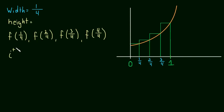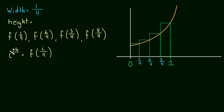So here, if we want the ith height — the height of any rectangle — what's our formula going to be? If I give you i as two, the second rectangle, you need a formula that gives you f of two-fourths. It's just going to be f of i over four. When i is one, you get one over four; when i is two, you get two over four. You can see it works for the third and fourth rectangles too. Make sure you really understand that — it's the key to solving all of these problems.